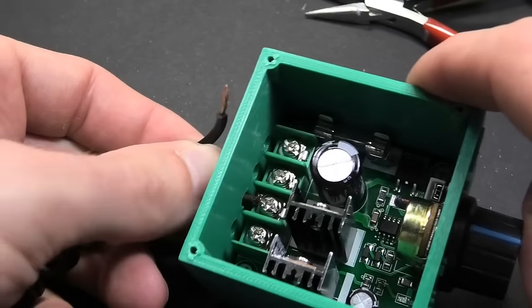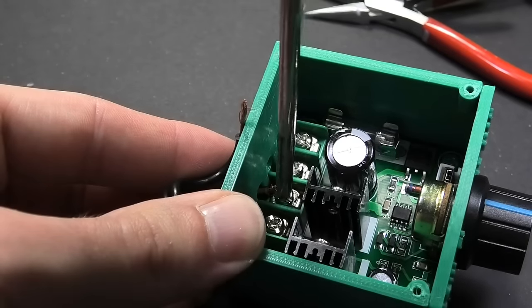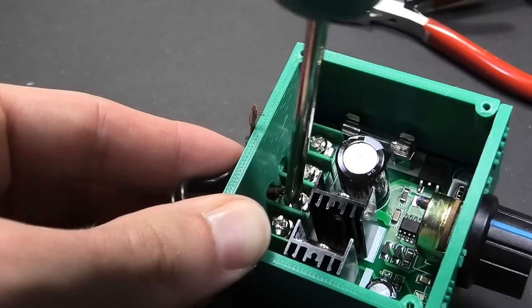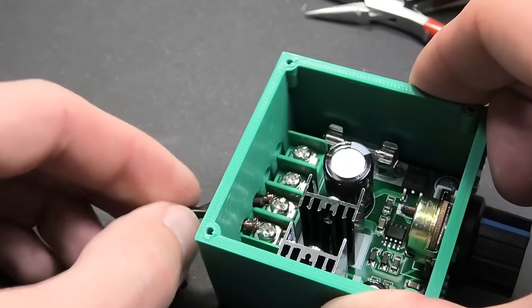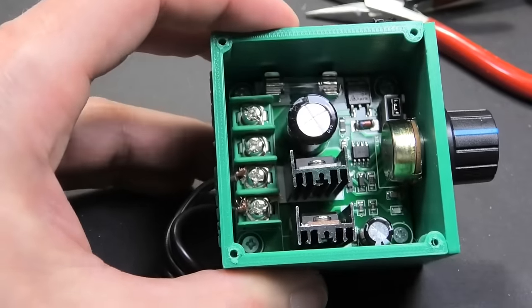The Proxxon Micromod goes to the output. The black cable with the brown line is plus and the whole black is minus. Now it remains to fix the wires with the screwdriver.